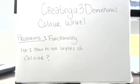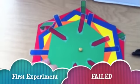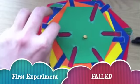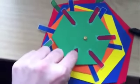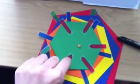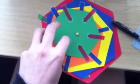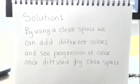Creating a three-dimensional color wheel, how do you see the layers of color? With my first experimentation, it failed because I could not see the layers of color. As I was trying to spin the wheel, these colors weren't translucent enough to see how they would layer, and there was no clear space to see how the colors could go together.